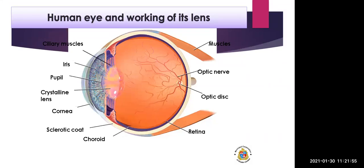On the surface of the iris there is a double convex transparent crystalline lens, just behind the pupil. This lens provides small adjustment of the focal length to focus the image. The lens creates a real and inverted image of an object on the retina — a screen inside the eye made up of light-sensitive cells. These cells get excited when light falls on them and generate electric signals, which are conveyed to the brain through the optic nerves.